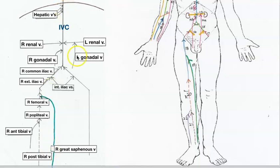Unlike arteries where arrows go down, blood flow in veins goes up. Always make sure when labeling any blood vessel, it ends with a little V if it's a vein, or a little A if it's an artery — for example, left renal vein versus left renal artery.